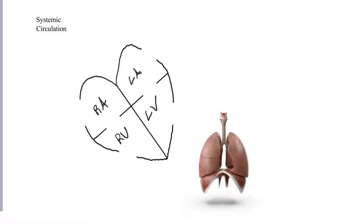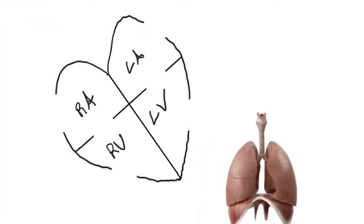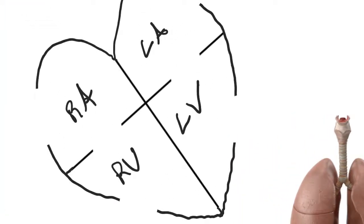In the heart we also have valves, and these valves are responsible for preventing backflow. Essentially when the heart squeezes, without valves blood would flow indiscriminately forward and backward — really just in the path of least resistance, which would probably be backwards. So we have valves in the heart that help ensure blood flows in one direction. We have four basic valves that you'll need to know.